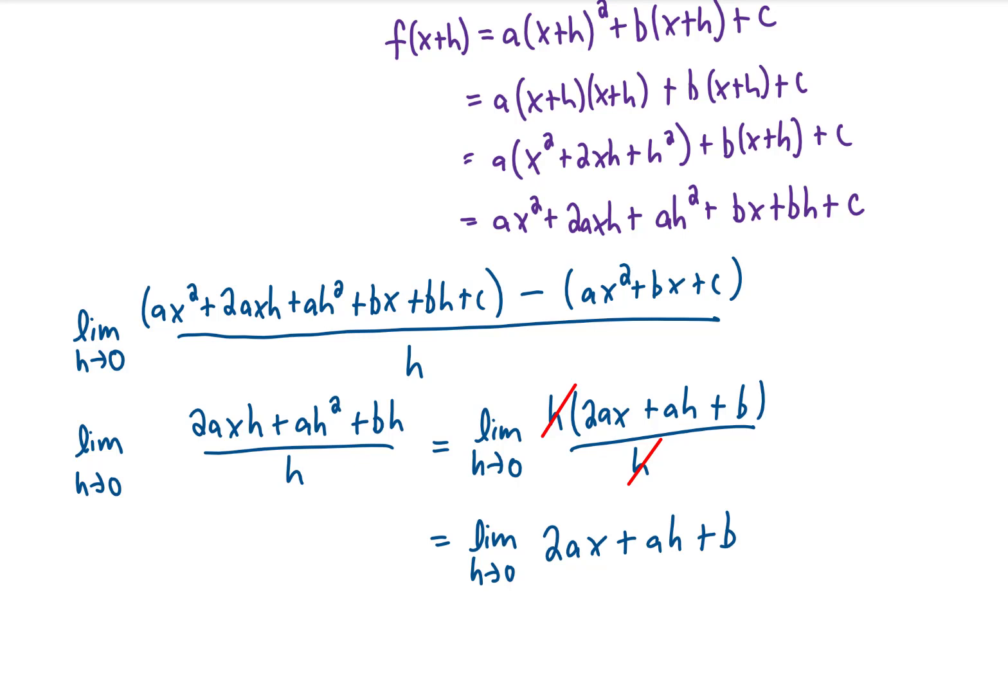That leaves us with a limit as h goes to 0 of this expression. And if we take our limit by plugging h equals 0 into that expression, we're just left with 2ax plus b, which is the final answer.